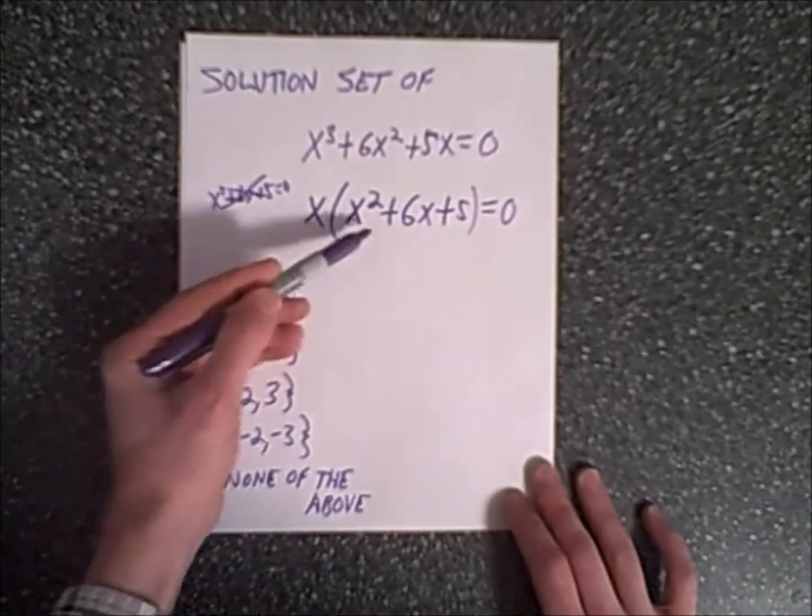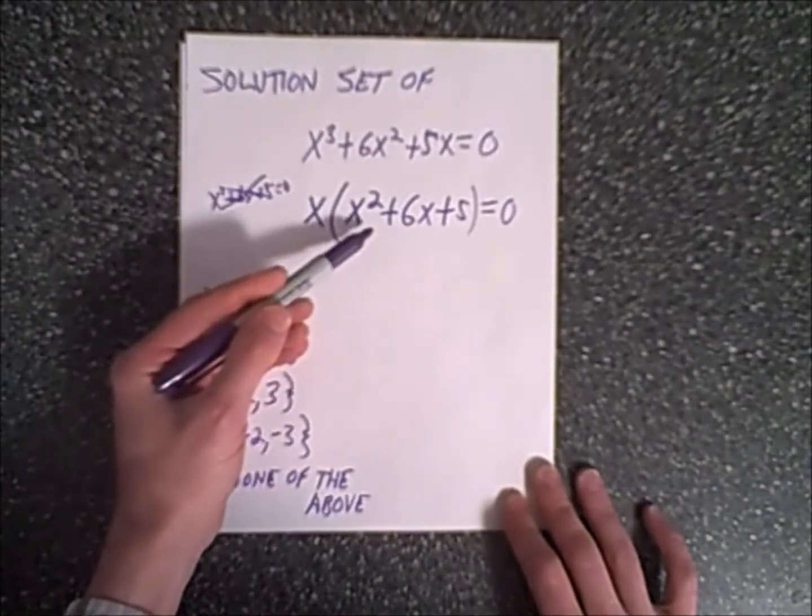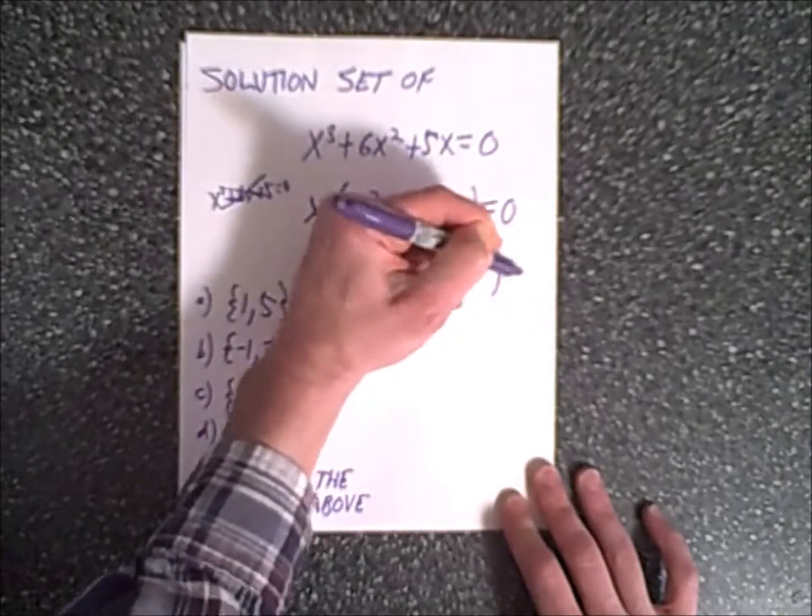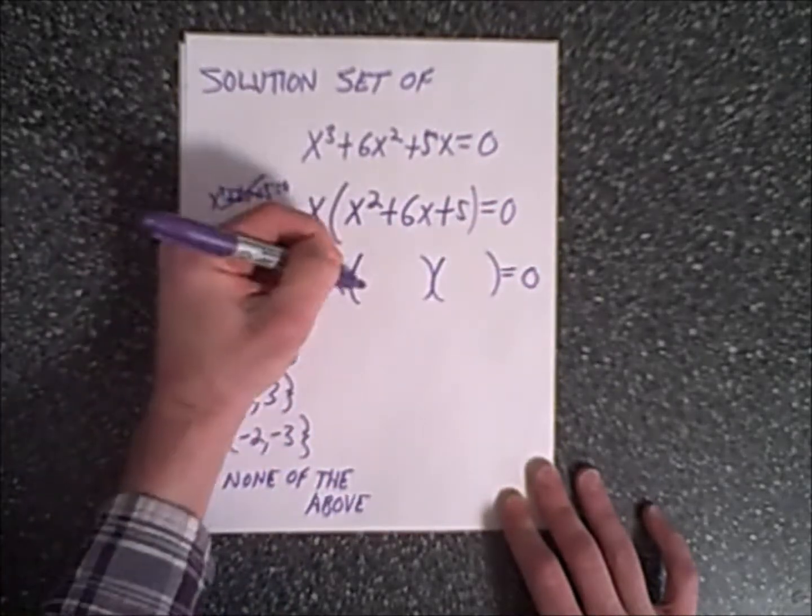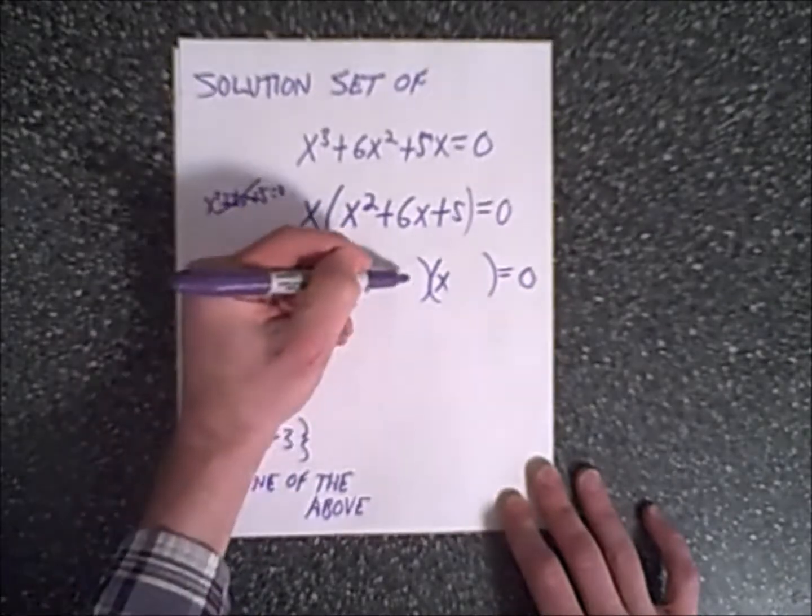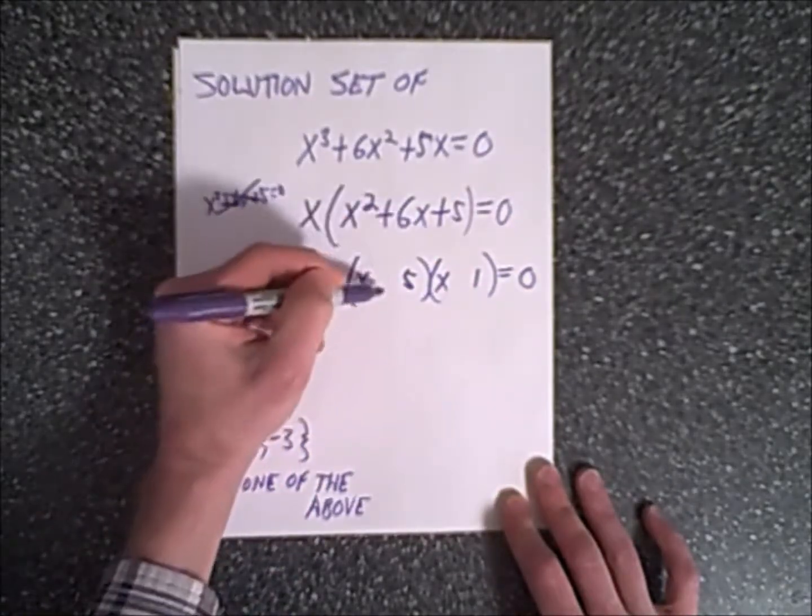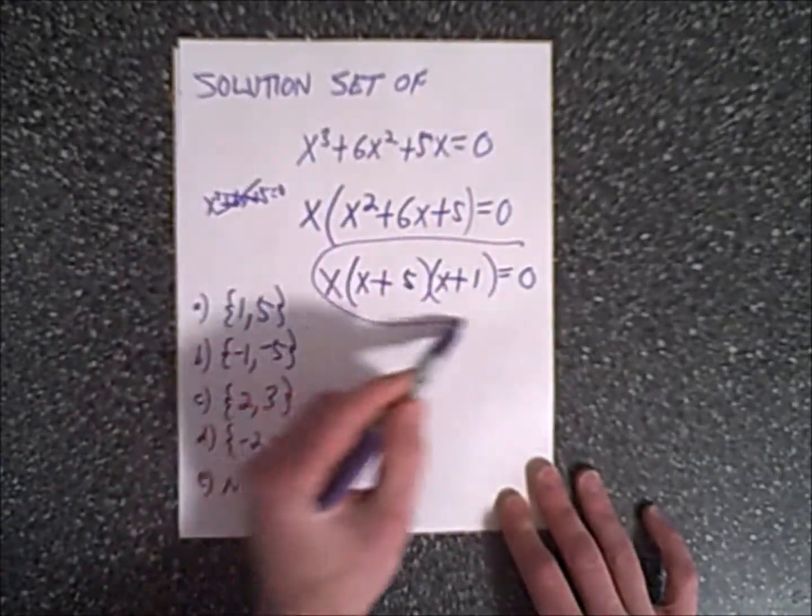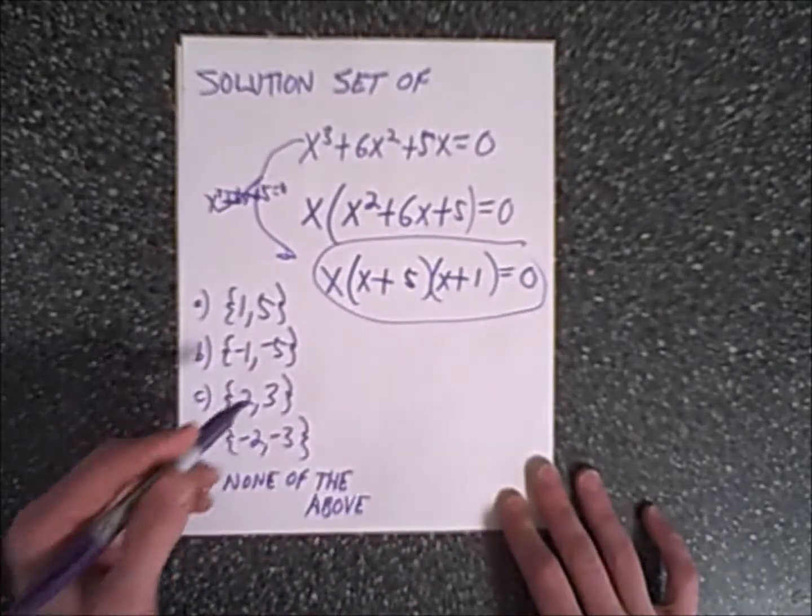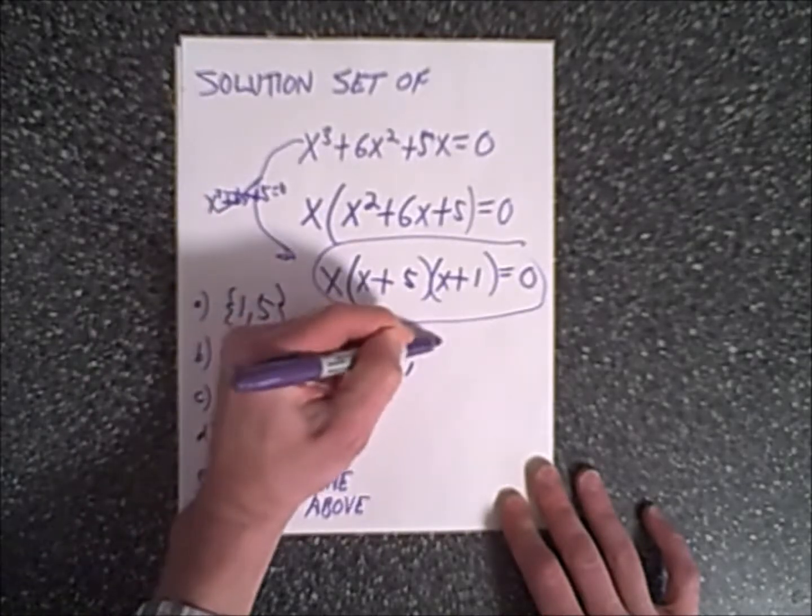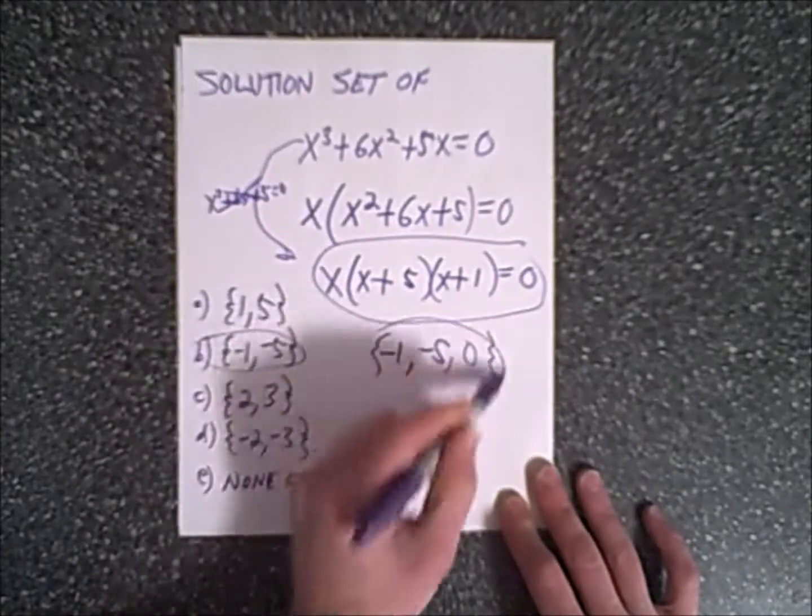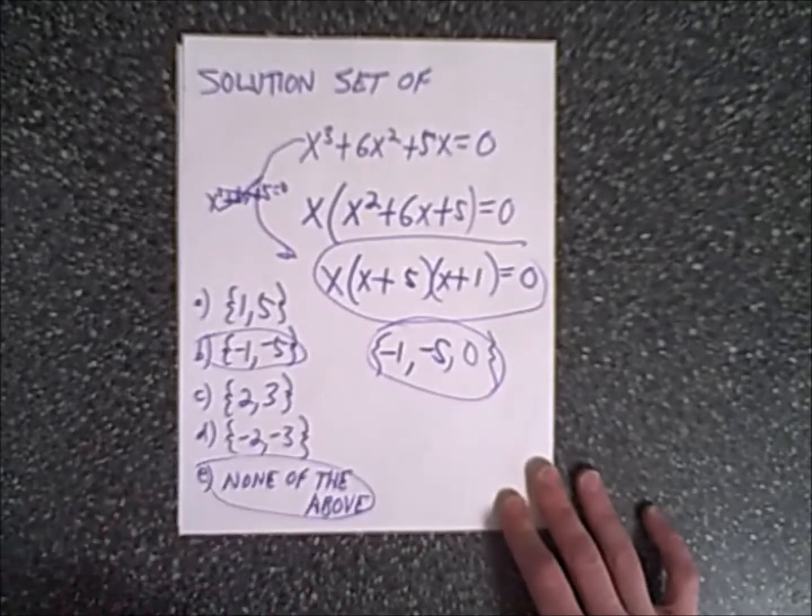Hopefully you can recognize that we can factor this further into two linear binomials. We have our x over here, and we'll put our two parentheses here. Since this is x squared, we'll put an x and an x. We want two terms that multiply to five and add up to six, which are five and one. The signs are plus plus. Here's our equation in factored form: x times x plus five times x plus one equals zero. Therefore our three solutions will be negative one and negative five, which is here, but also zero. That is our solution, three answers, which is E, none of the above.